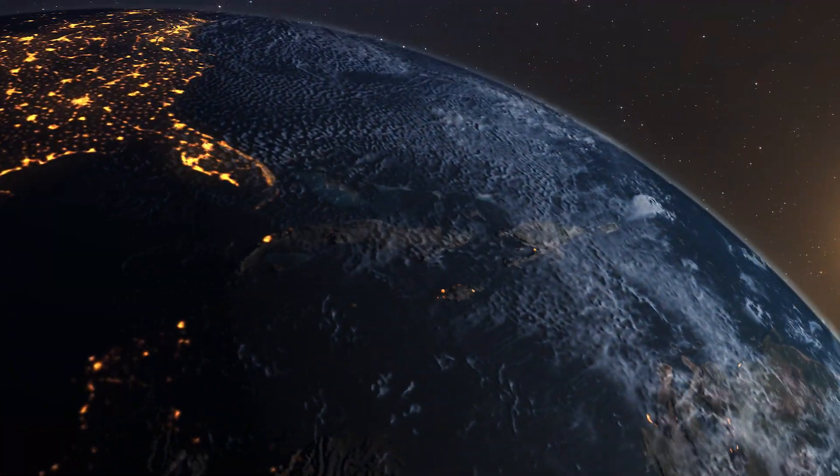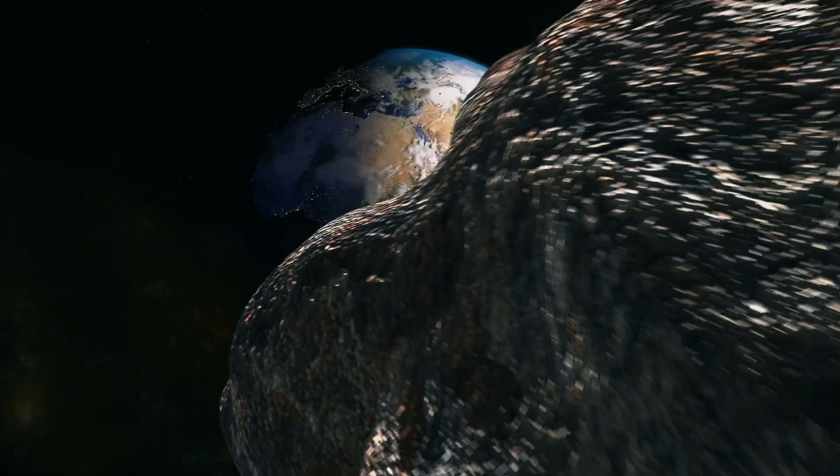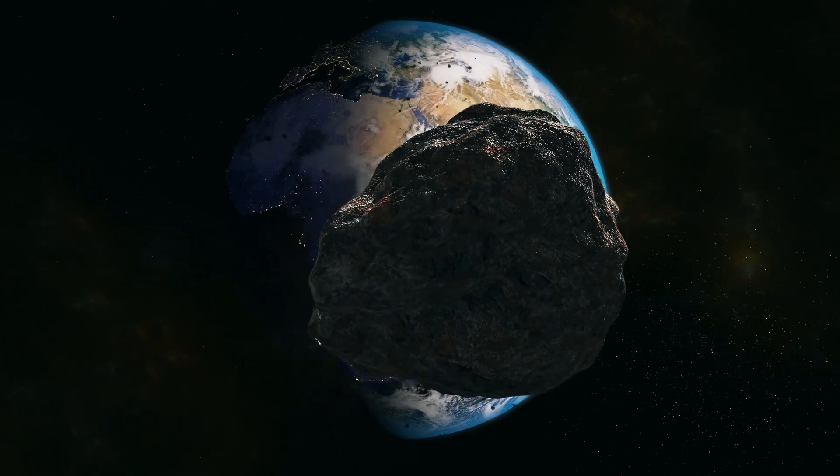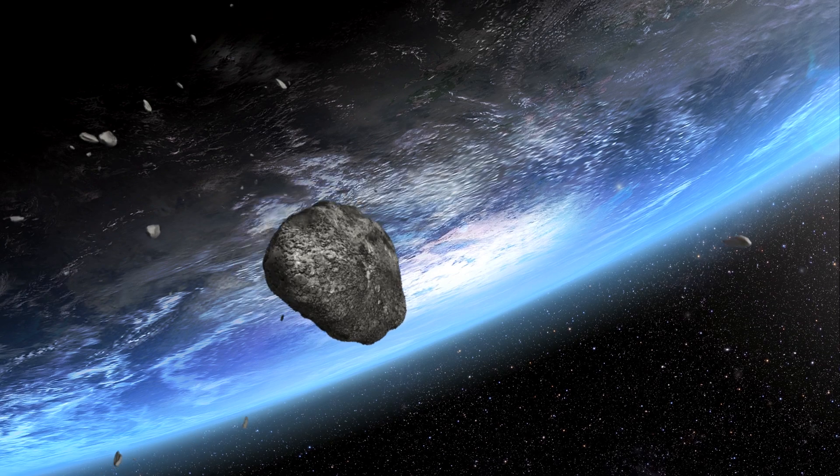Think of it like this. Imagine Earth as a giant cosmic merry-go-round. As it spins through space, sometimes small objects get caught up in its gravitational pull. These objects start orbiting Earth, like how you might circle that merry-go-round.